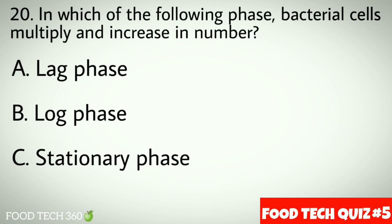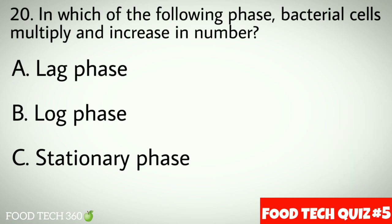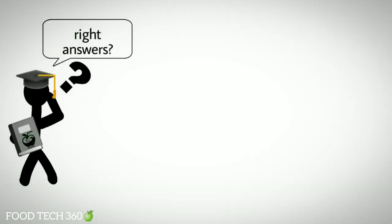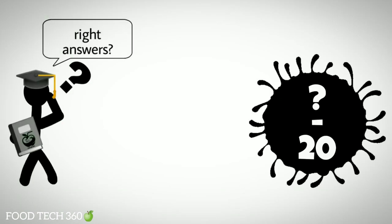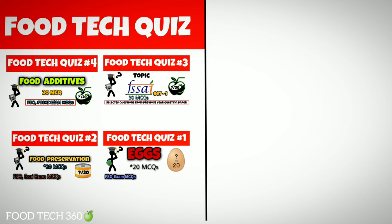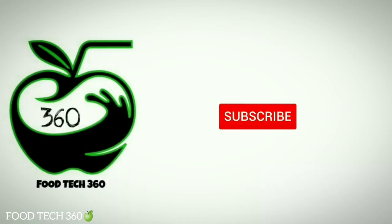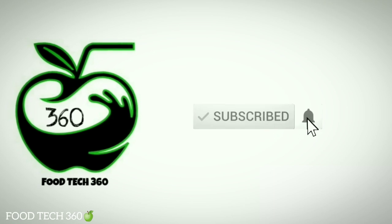Question number twenty: in which of the following phases do bacterial cells multiply and increase in number? Options: a) lag phase, b) log phase, c) stationary phase. Correct answer: b) log phase. Now, how many answers did you get right? Let us know your score out of 20 in the comment section. Previous food tech quizzes are linked in the description. If you found this video helpful, please like, share, subscribe, and hit the bell icon.